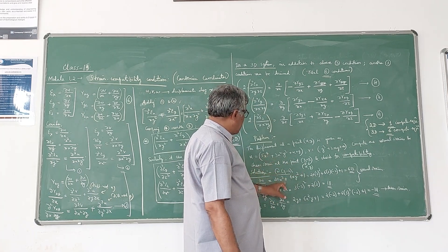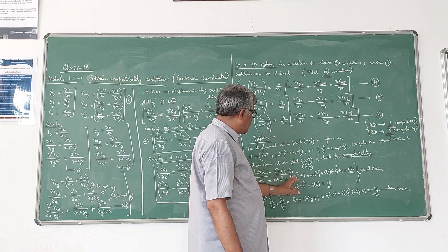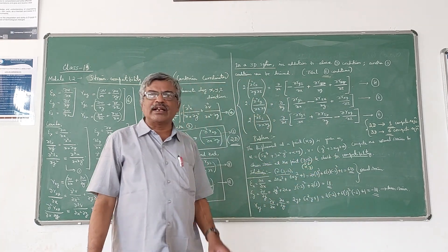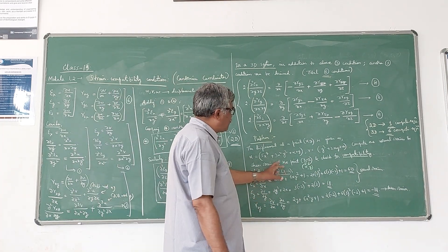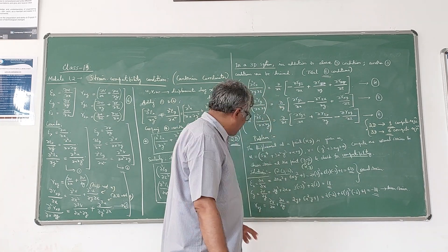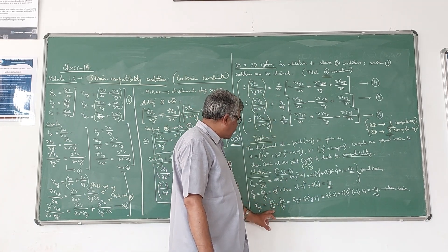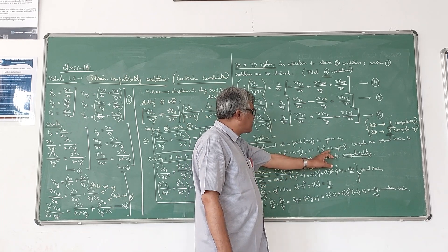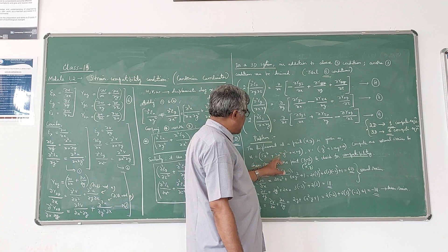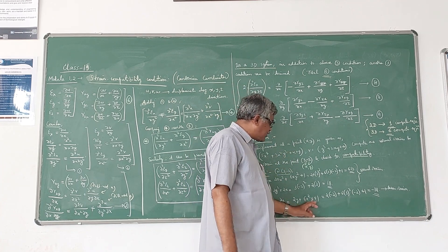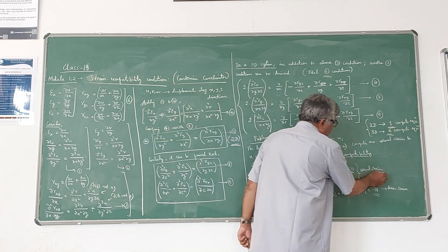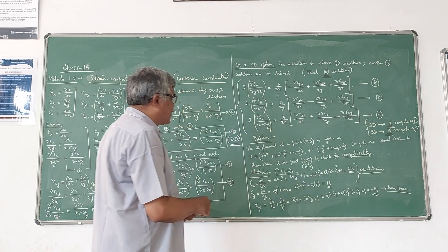First let us find the strain components. Epsilon X is dou U by dou X, so differentiating u partially with respect to x gives 20x^3 + 6xy^2 + 1. Substituting x = 3, y = -2 gives Epsilon X = 613. Epsilon Y is dou V by dou Y; differentiating v with respect to y gives 3y^2 + 2x. Substituting gives Epsilon Y = 18. Gamma XY is dou V by dou X plus dou U by dou Y; dou V by dou X is 2y and dou U by dou Y is 6x^2y + 1. Substituting gives Gamma XY = -111. These are the normal and shear strain components at point (3, -2).